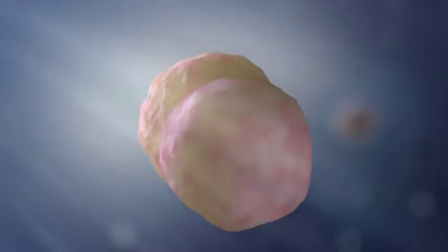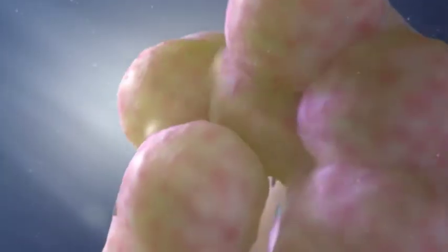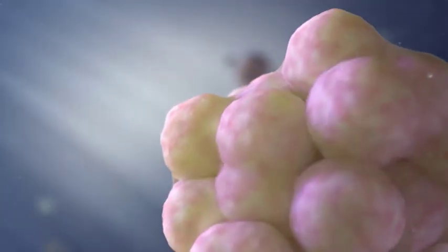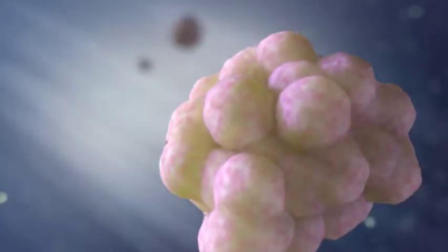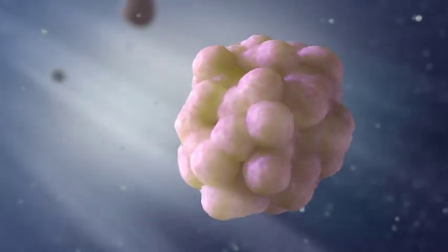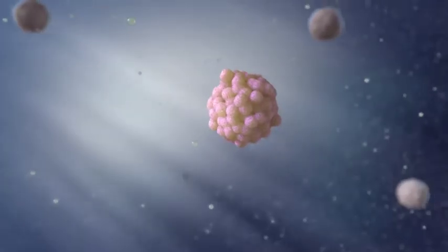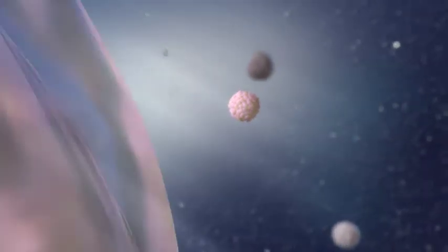At the Englander Institute for Precision Medicine, we culture patients' tumor cells taken during biopsies. The cancer cells are grown in a special gel-like substance which allows the cells to form three-dimensional structures just as they would in the body.